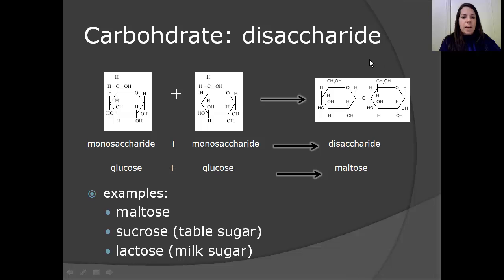The next thing we're going to talk about is disaccharides. Di means two. And then, of course, we've got saccharide again for sugar. So, two sugars. A monosaccharide plus a monosaccharide equals a disaccharide. Some examples of disaccharides are maltose, sucrose, which is table sugar, and lactose, a milk sugar.